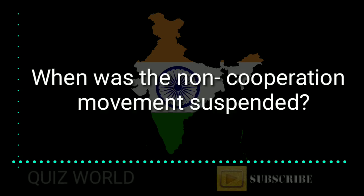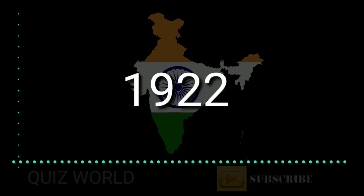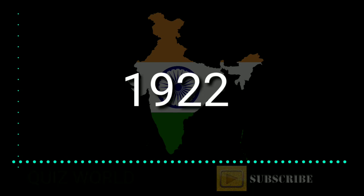When was the Non-Cooperation Movement suspended? Answer is 1922.